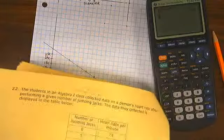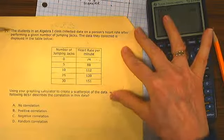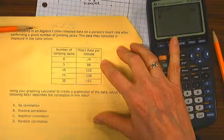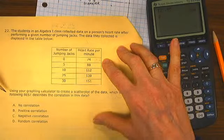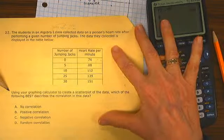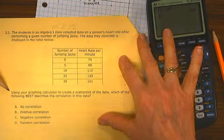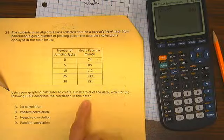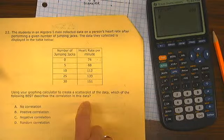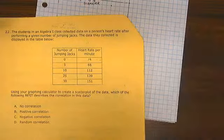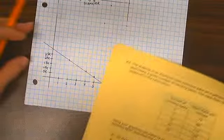22. The students did jumping jacks. The data they collected is displayed here. We could use our graphing calculator to create a scatter plot, but why? Which best describes the correlation of this data. We can just graph this by hand. This is not such a big deal.